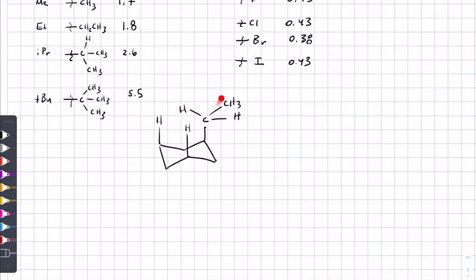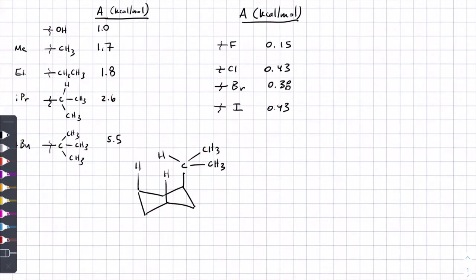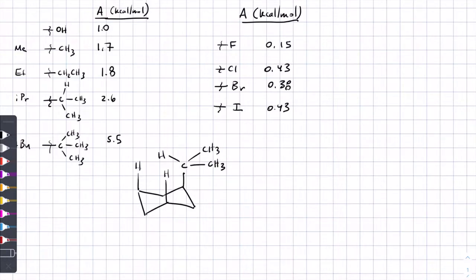You can get that other methyl group out of the way, so it's not any more bad to have the ethyl group axial than it is to have the methyl group axial. If you start replacing hydrogens with other methyl groups, as is the case with the isopropyl substituent, the A-value starts to increase because you no longer have to get just one methyl group out of the way — you've got to get two. But then it jumps up quite a bit more once you put a t-butyl group on there, because now there's no getting the methyl groups out of the way.